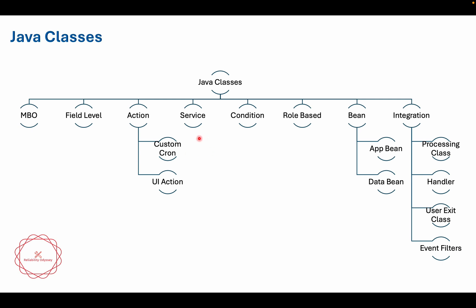The next type is services. Services are predefined methods and helper classes. When Maximo loads and starts, these classes are loaded into memory first. Examples include security services and bulletin board services — these are loaded into memory and provide methods that can be accessed very frequently.